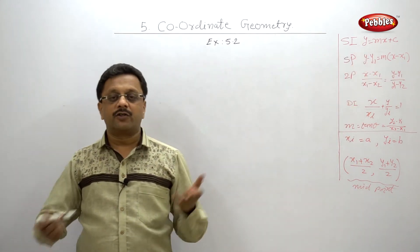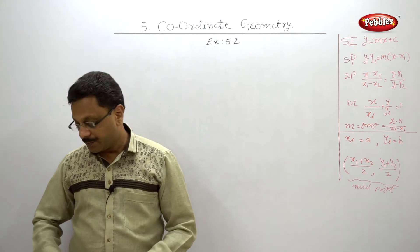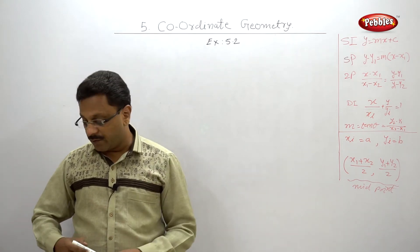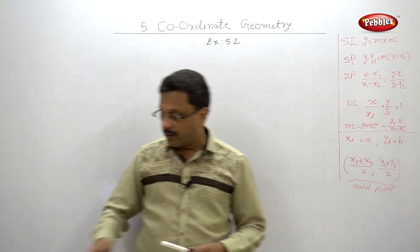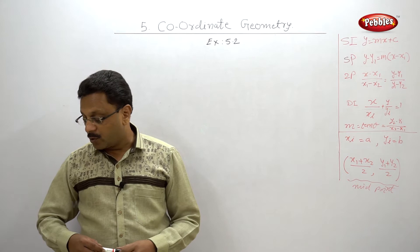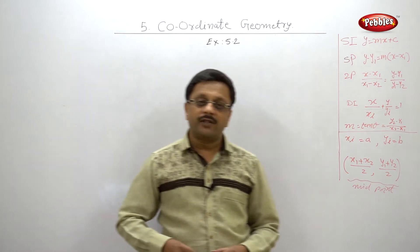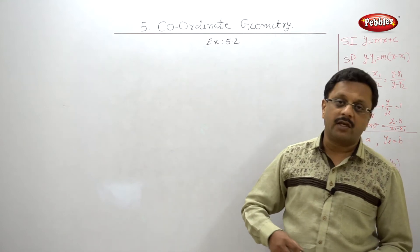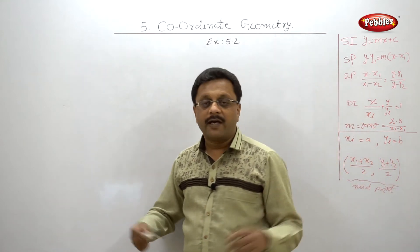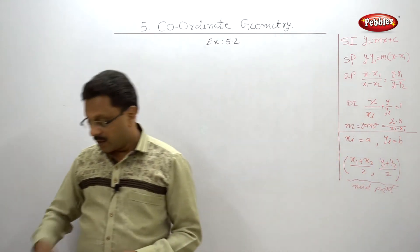The first, I am going to solve the first one. They are given the y is equal to 3x minus 5. And what do I ask? Find the slope and y-intercept. If y is equal to 3x minus 5, then m slope is 3 and y-intercept is minus 5.